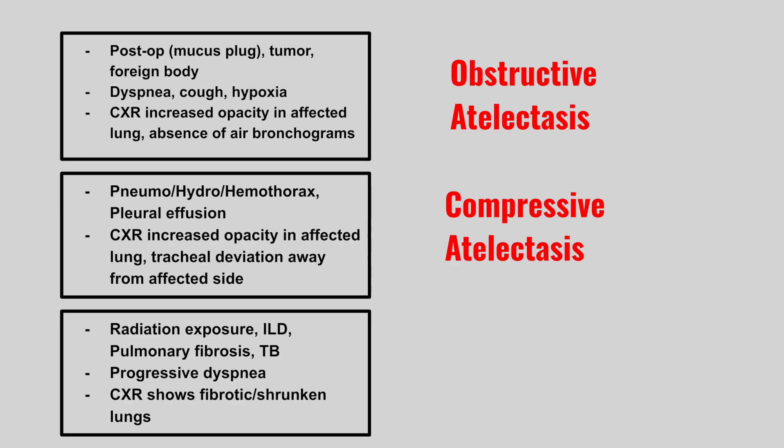Now we have a patient with either radiation exposure, interstitial lung disease, pulmonary fibrosis, or TB, with progressive dyspnea and chest x-ray shows a fibrotic shrunken lung. This is contraction atelectasis.